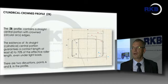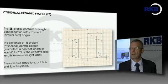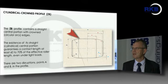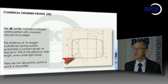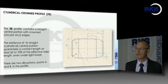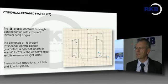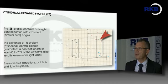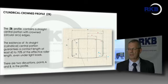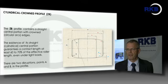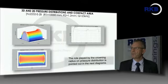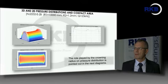The further design is the so-called cylindrical crown profile ZB. The ZB profile contains a straight central portion with crowned edges. The straight cylindrical portion guarantees a contact length of at least 60 to 70 percent of the effective roller length even under light loads. However, there are two disruption points named A and B which cause stress concentration and pressure distribution concentration.